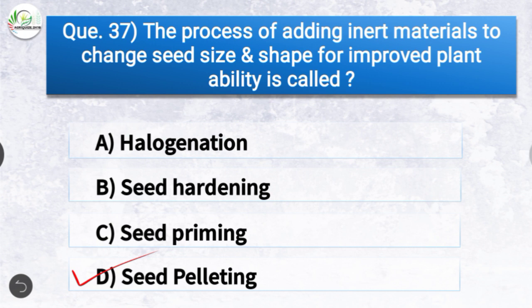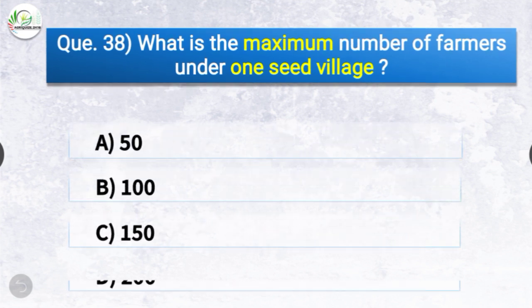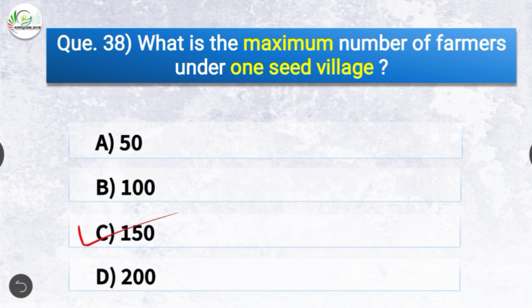Question number thirty-eight: What is the maximum number of farmers under one seed village? The options are 50, 100, 150, or 200. The correct answer is option C — 150. The maximum number of farmers under one seed village is 150, whereas the minimum number is 50.